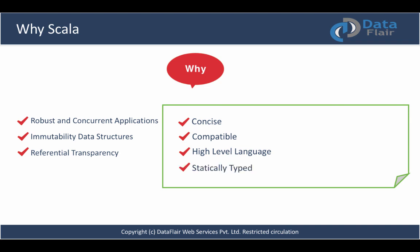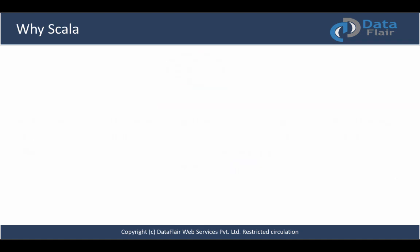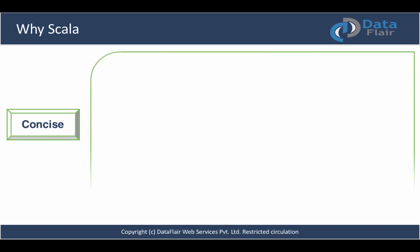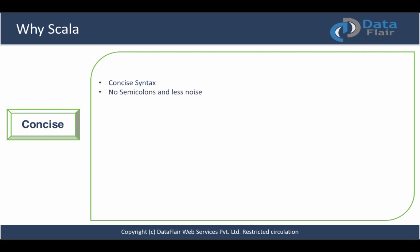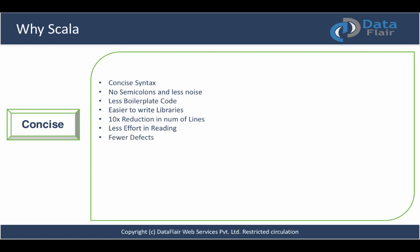Scala is concise, compatible, a high-level language, multi-paradigm, and easier for parallelism. So let's discuss them one by one. First, Scala is concise. Anyone who has some programming experience with Scala can explain that to you — the comfort this language provides to not only programmers but also developers who are constructing libraries. Programmers have reported reductions in number of lines up to a factor of 10 compared to Java. Scala has concise syntax — there are no mandatory semicolons and that's a less noisy syntax to write. Much of the boilerplate code has been removed, making it easy to write libraries. Fewer lines means less typing but also less effort reading and understanding programs, and it means fewer defects.